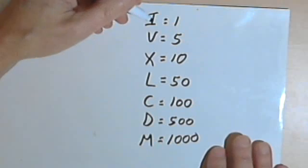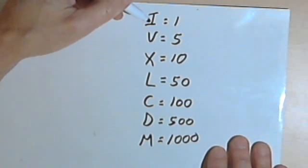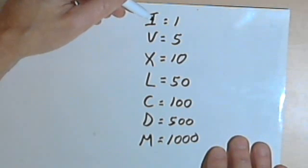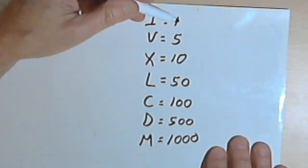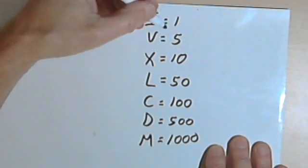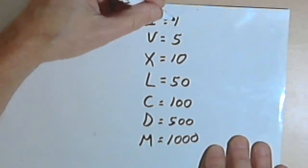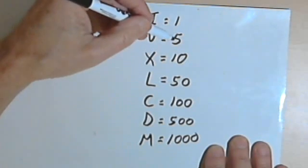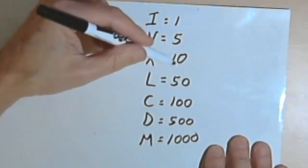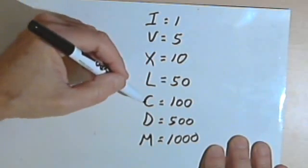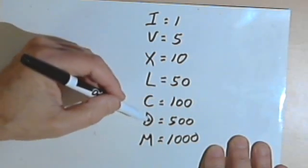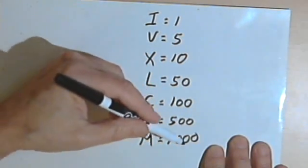In Roman numerals we have some letters, which are usually written as capitals, that are going to stand for the numbers that we typically use. So an I is going to stand for a 1, a V will be a 5, X is 10, L is 50, C is 100, D is 500, and M is 1000.